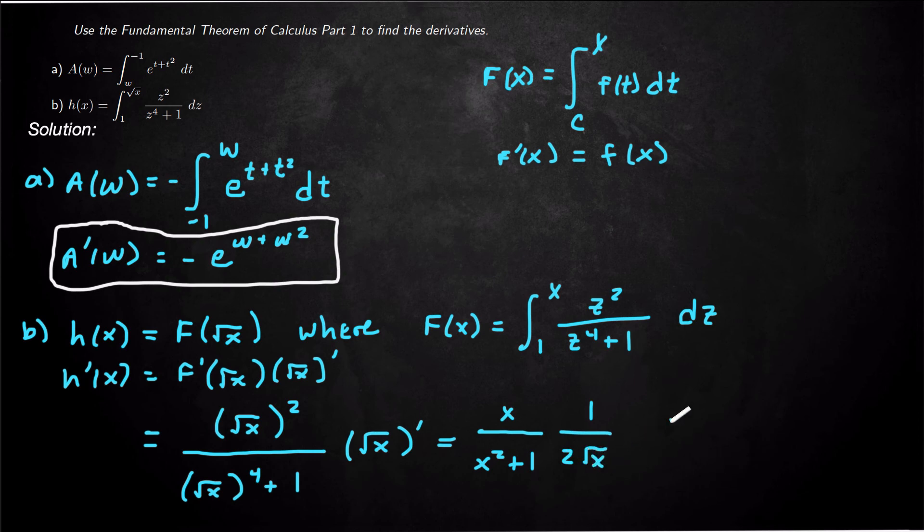And that's going to be x over x squared plus 1 times 1 over 2 square roots of x. And now we can simplify a little bit. The square root of x becomes square root of x in the numerator. So this is going to be 1 half times square root of x over x squared plus 1. And that's our derivative.